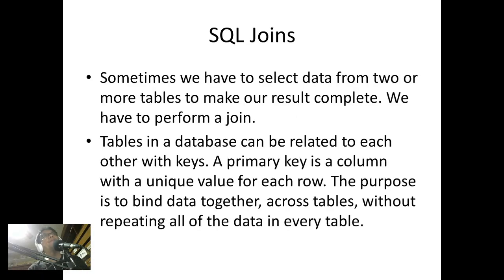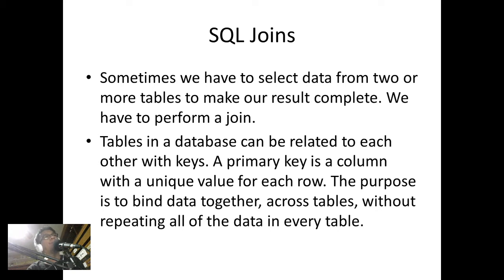SQL Joins. Sometimes we have to select data from two or more tables to make a result complete, then we have to perform what we call a join. Tables in a database can be related to each other with keys. A primary key is a column with a unique value for each row. The purpose is to bind data together across tables without repeating all of the data in every table. So usually if we join, we match the primary key of one table to the foreign key of another table.